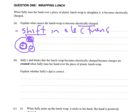So in this case, that shift in electrons, we don't know whether it's added or removed electrons. But the other thing we need to look at is how has this shift occurred? And it's due to the rubbing.